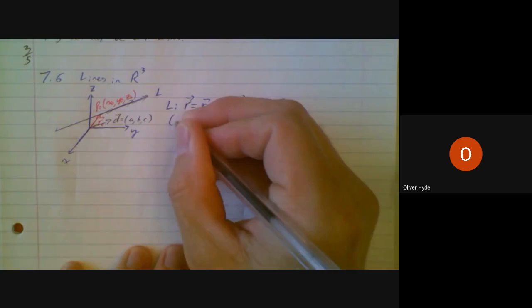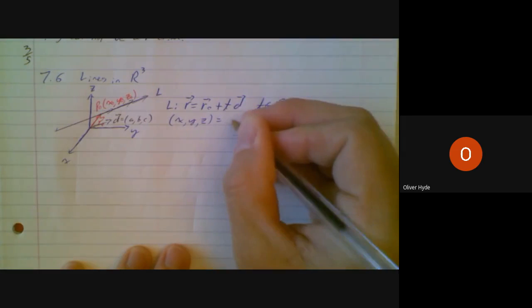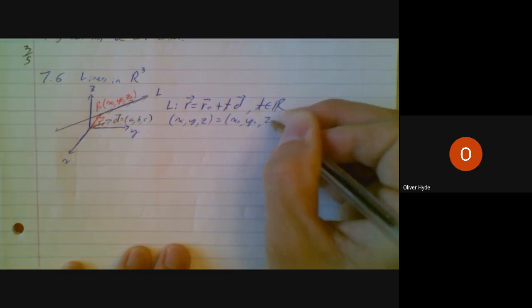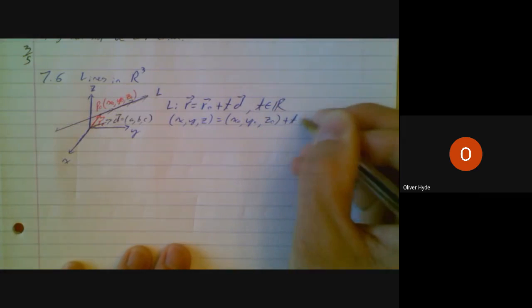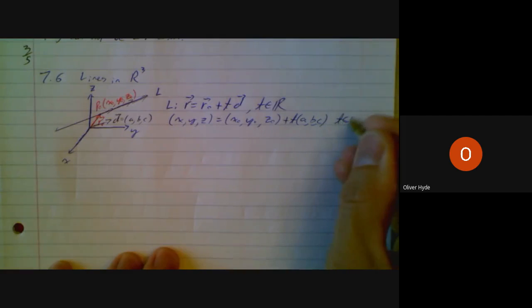It doesn't really tell me in what space I'm in. I suppose I could be a four-dimensional line here. When I become more specific by putting in the actual number of components, it should be clear in which space I am in. T is all real numbers.